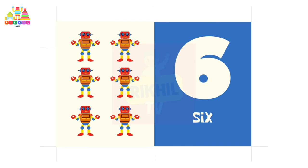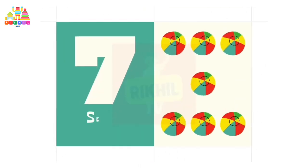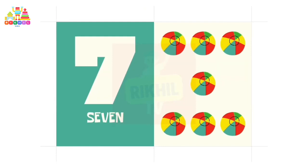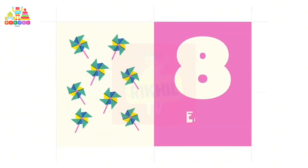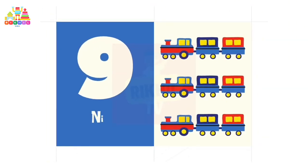Seven, seven toys. S, E, V, E, N, 7. Eight, eight paper planes. E, I, G, H, T, 8.